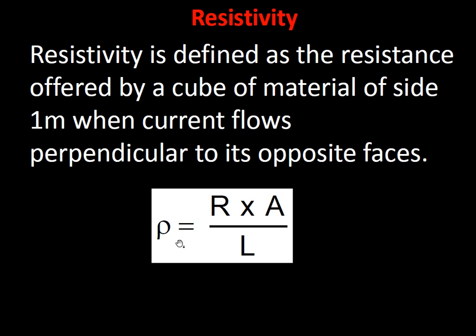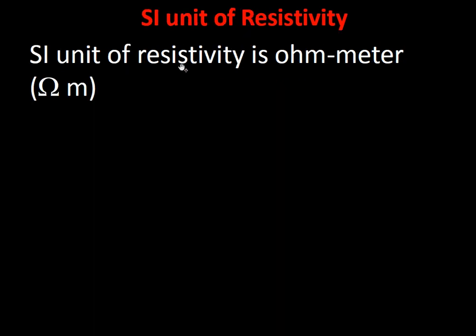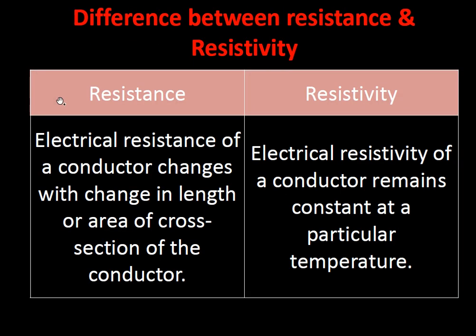Resistivity is defined as the resistance offered by a cube of material of one meter side with current flowing perpendicular to its opposite faces. Simply put, it is the property of a given material to oppose the flow of electrons. The SI unit of resistivity is ohm-meter (Ω·m). Unlike resistance, electrical resistivity remains constant at a particular temperature for a particular material.